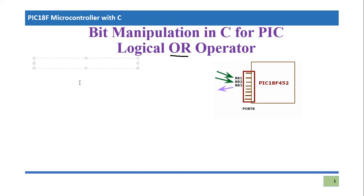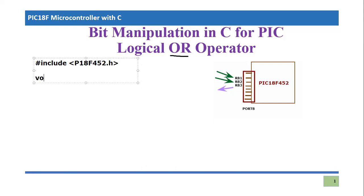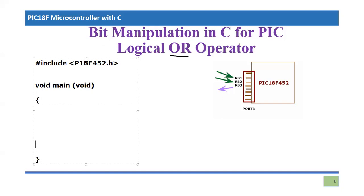First, we define the header file: #include p18f452. This is the basic C code structure we have already discussed earlier — the header file declares the specific chip number of the microcontroller. Then we follow with the main code structure: void main(void), and within the braces we write the body of the code. Before writing the code, let's first analyze the problem.